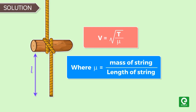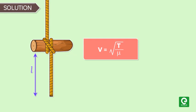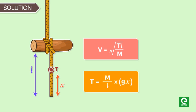Let's call this equation 1: v equals square root of T times l divided by m. In this string, the tension at every point is different due to the weight of string below that point. Therefore, tension at distance x from the lowest end will be m by l times gx.